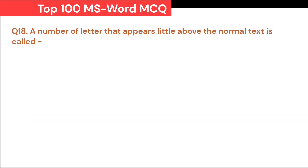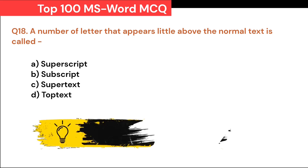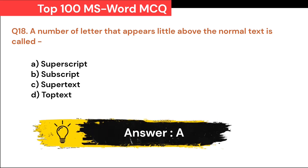A number or letter that appears a little above the normal text is called: A. Superscript. B. Subscript. C. Supertext. D. Top text. Correct answer is A. Superscript.